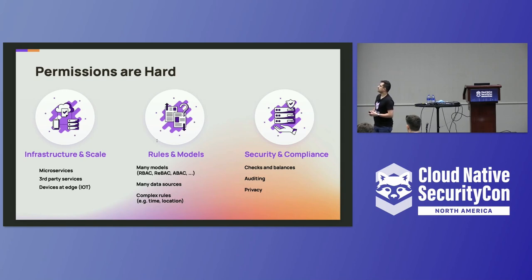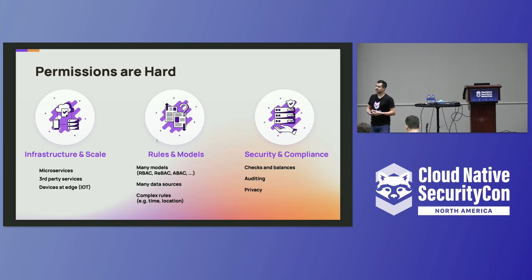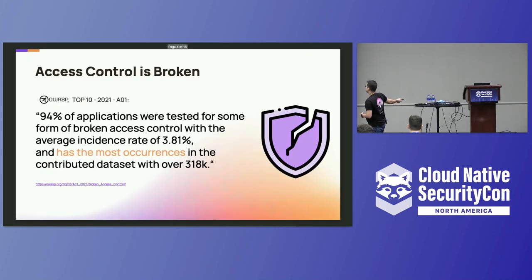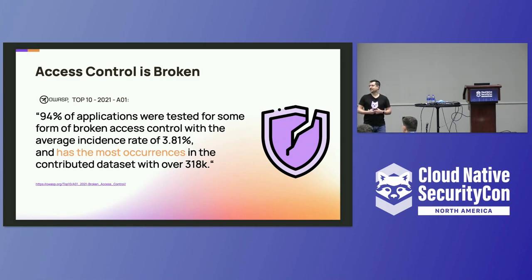There are also mounting security and compliance standards we need to adhere to. We all like our privacy, but it comes with a price in implementation. We need built-in auditing, we need checks and balances — for example, I want to be able to say who can even change the policy inside my application. All of these challenges are the reason that broken access control is the top issue in the OWASP Top 10.